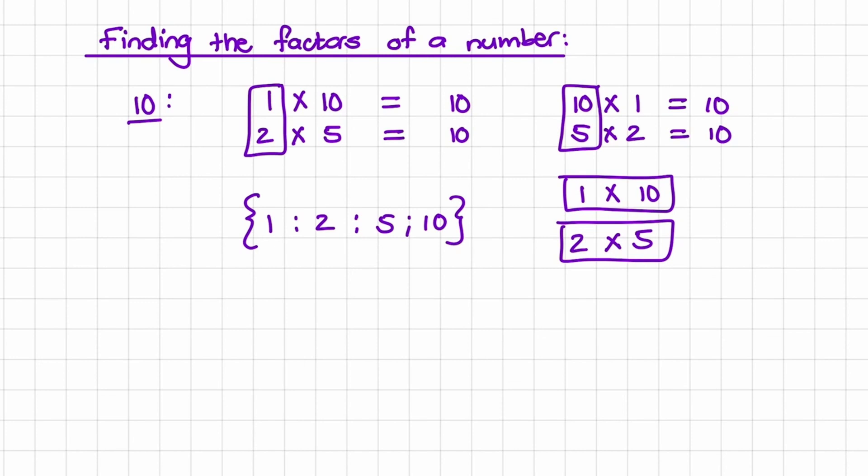Also, what you can notice is when we write it down in set formation, we have 1 at the start and 10 at the end. We write numbers in ascending order, and then 2 multiplied by 5, so they are paired together.